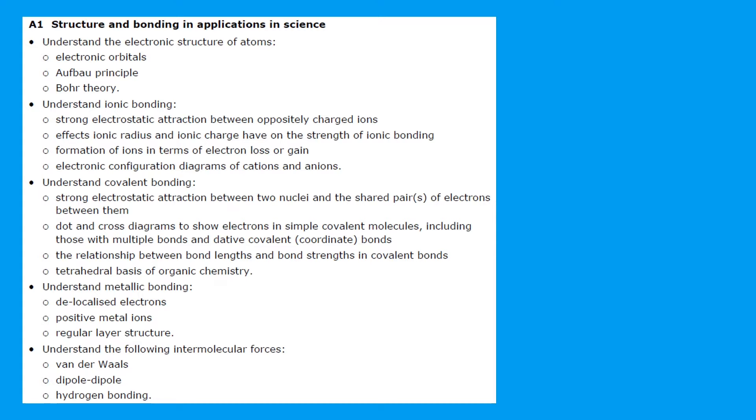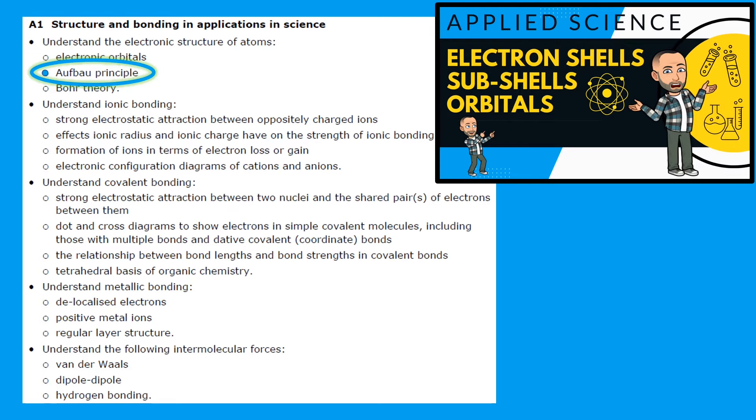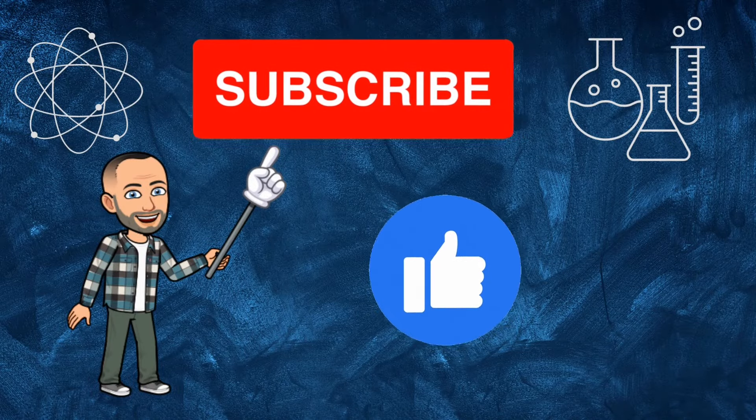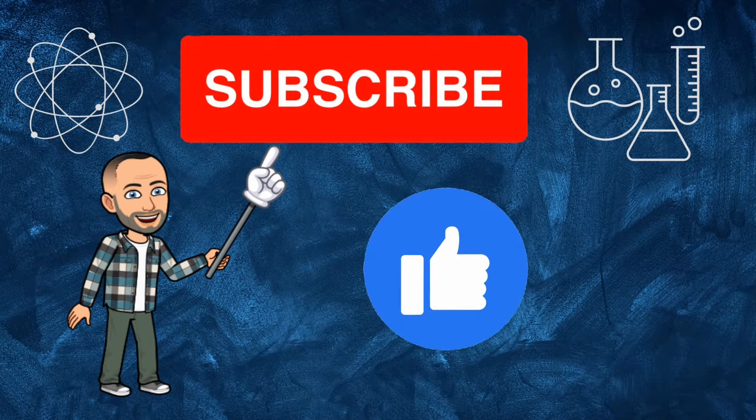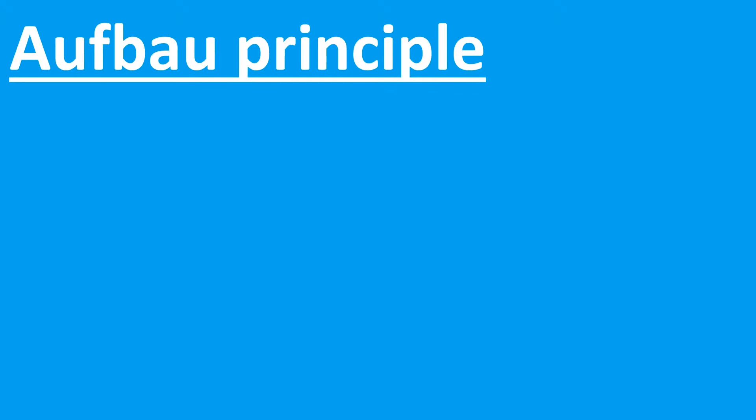Hello there, welcome to my channel on chemistry lessons. This is a BTEC Applied Science lesson and it focuses on the Aufbau principle and electron configuration. If you haven't already seen the previous video on electronic orbitals, use the link in the description below and go watch that video first. If you're finding these videos useful, can I ask that you please subscribe and like so we can get them out to as many people as possible.